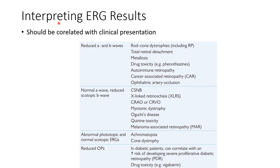Now let us discuss the interpretation of ERG results. Full-field ERG results should always be correlated with clinical presentation. Reduced A and B waves are seen in conditions like rod-cone dystrophies such as retinitis pigmentosa, total retinal detachment, metallosis, drug toxicity like phenothiazines, autoimmune retinopathy, cancer-associated retinopathy, and ophthalmic artery occlusion.